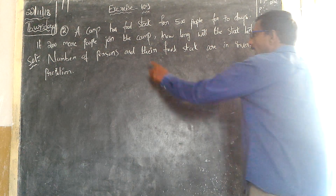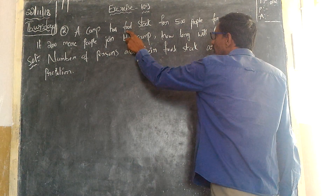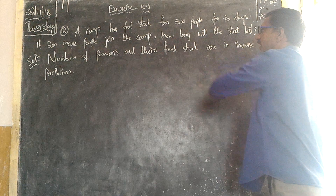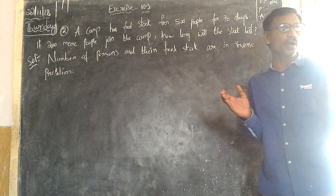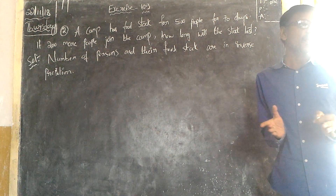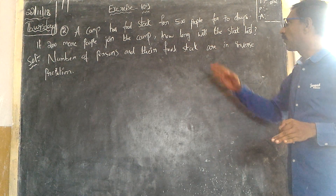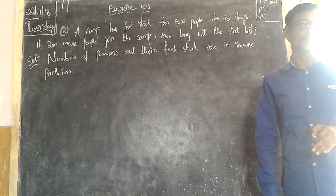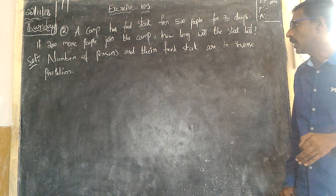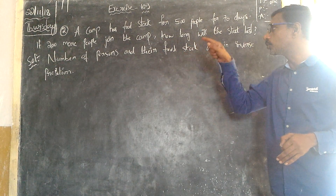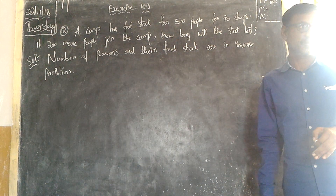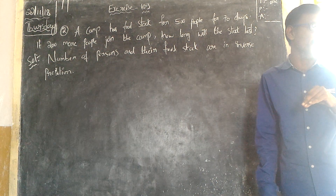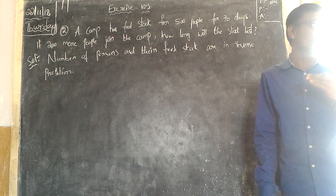A campaign has put staff 500 people per 7 days. In that campaign, it was put to 500 members per 7 days. If 200 more people joined in that campaign, we had to go to the campaign with 200 members.